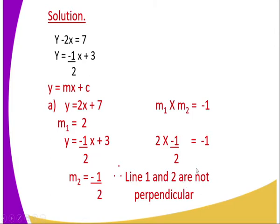There is an error in the conclusion written — the word 'not' should not be there, because we can see that the product of the gradient of line one and gradient of line two equals negative one. Therefore, we can make the conclusion that line one and line two are perpendicular.